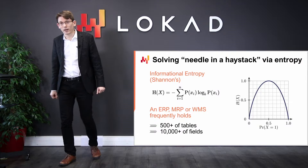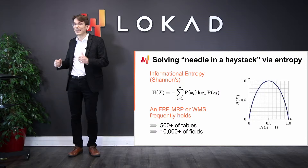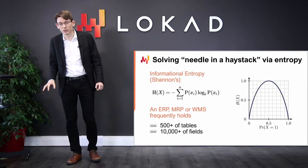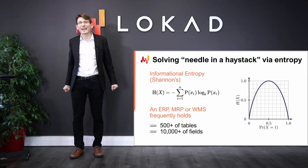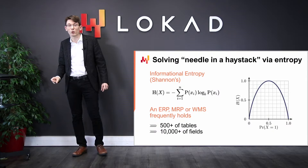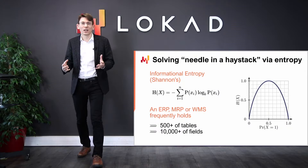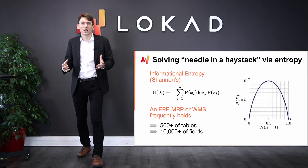So let's characterize a typical piece of enterprise software. A typical piece of enterprise software is going to contain a database — the vast majority of those software are designed that way. It's going to contain something like 500 tables and 10,000 fields. A field is basically a column in a table. So we have, as an entry point, a system that potentially contains a massive amount of information. But the reality is that in most situations, only a tiny fraction of all this software complexity is actually relevant for the supply chain of interest.